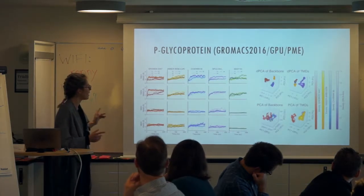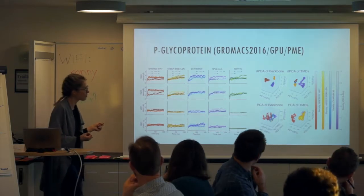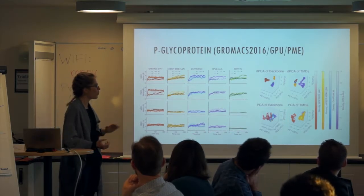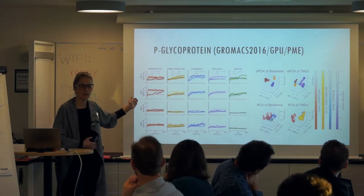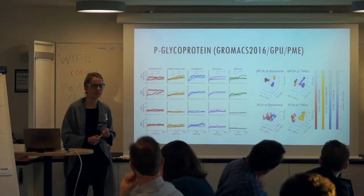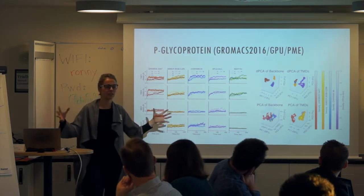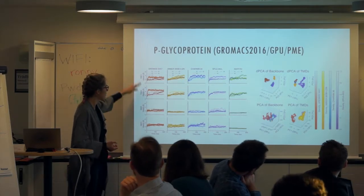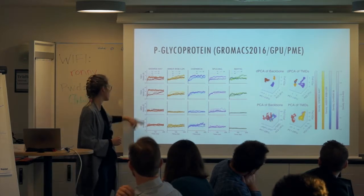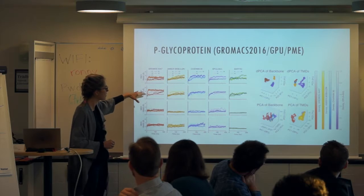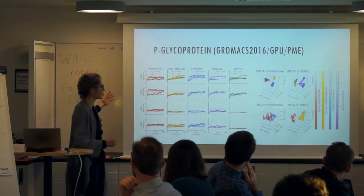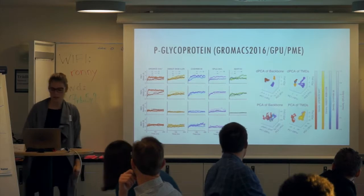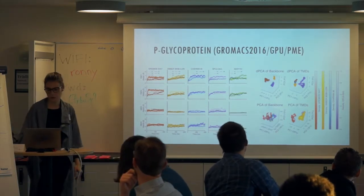Last year we had a student, and I asked her to do something I was really interested in after a period of frustration. I asked her to use all available force fields in GROMACS to see what we'd get. Do we get unfolding of helices with different force fields? Do we get clumping of transmembrane domains? These are RMSDs of each nucleotide binding domain and transmembrane domain — you can see it varies. This is a PCA analysis in dihedral and Cartesian space, and again, all the simulations are pretty much all over the place.